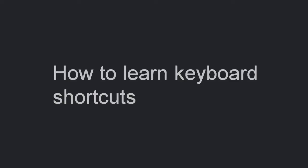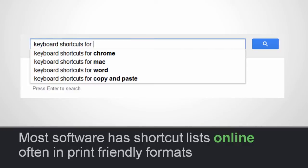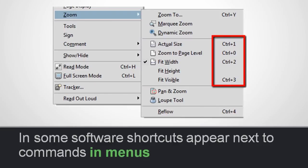When people consider using keyboard shortcuts, they are often worried about how they are going to learn them — but it is not nearly as difficult as all that. The easiest way to learn keyboard shortcuts is simply by searching online. Just search 'keyboard shortcuts for Windows,' or for Chrome, or for Word, or for a specific command. For most software applications there will be a page — maybe by the software vendor or a user — listing the keyboard shortcuts they recommend.